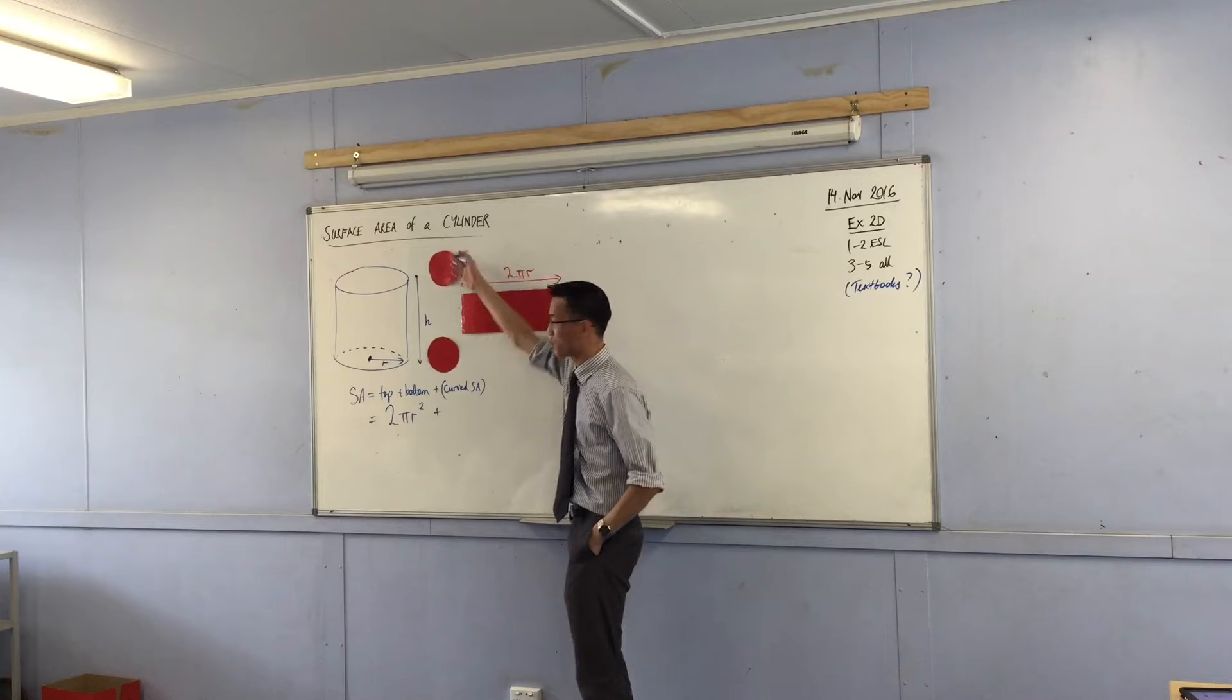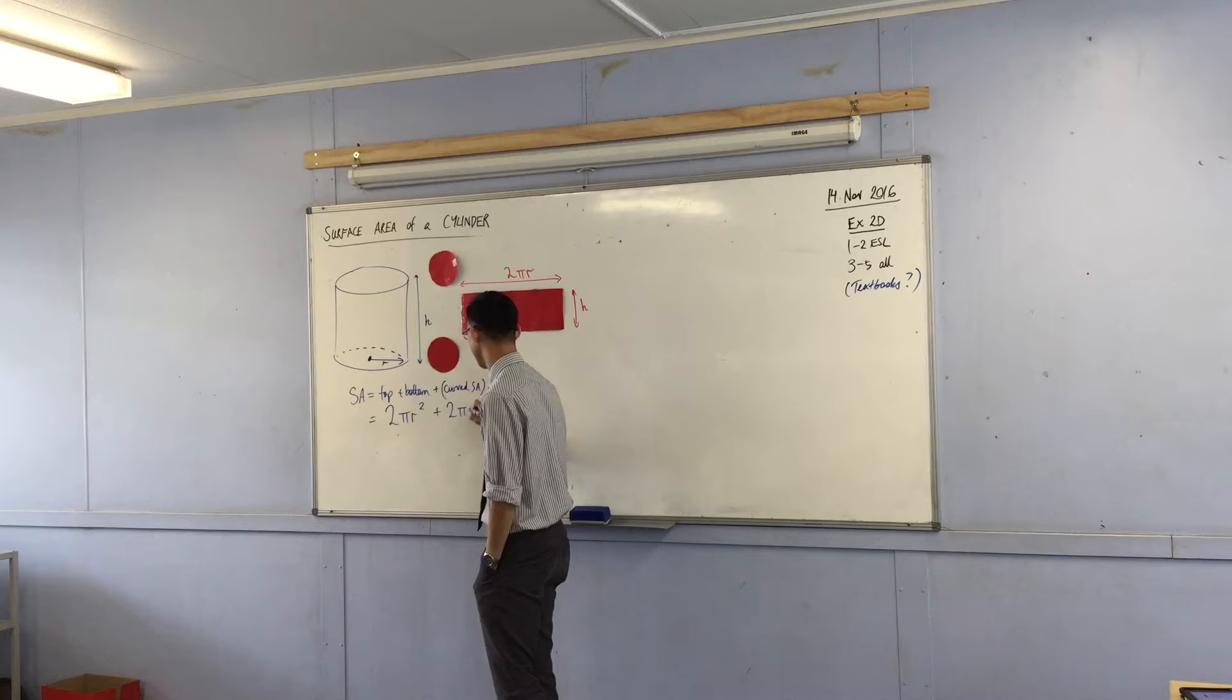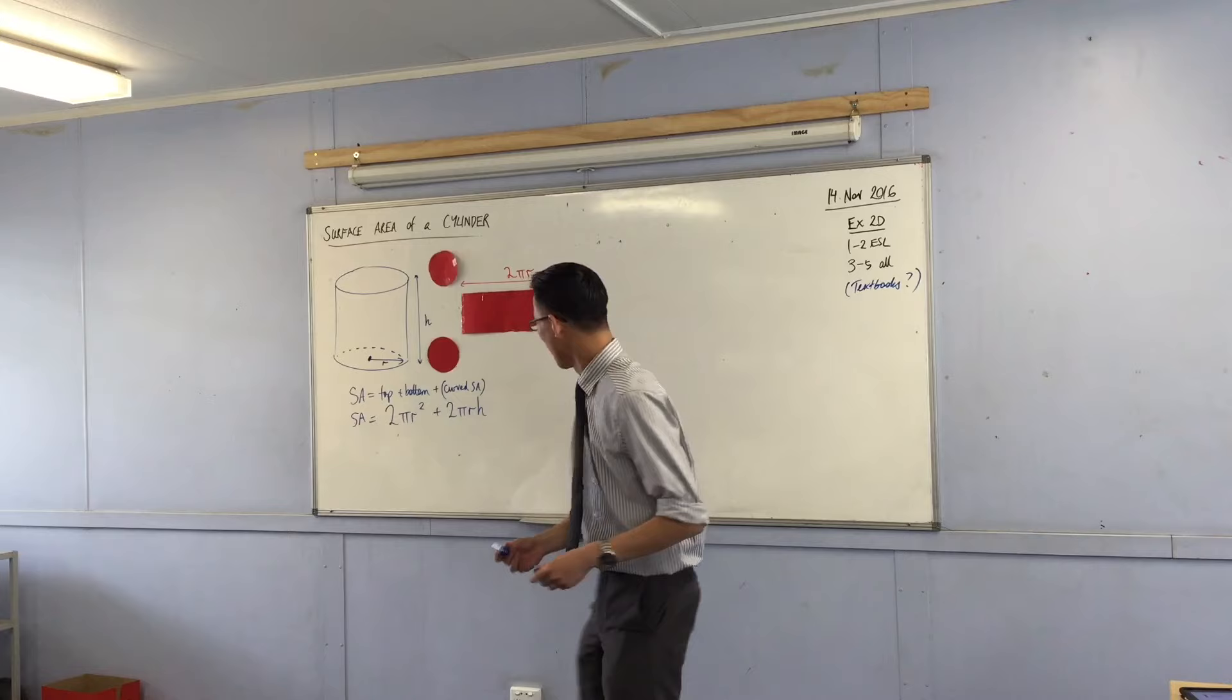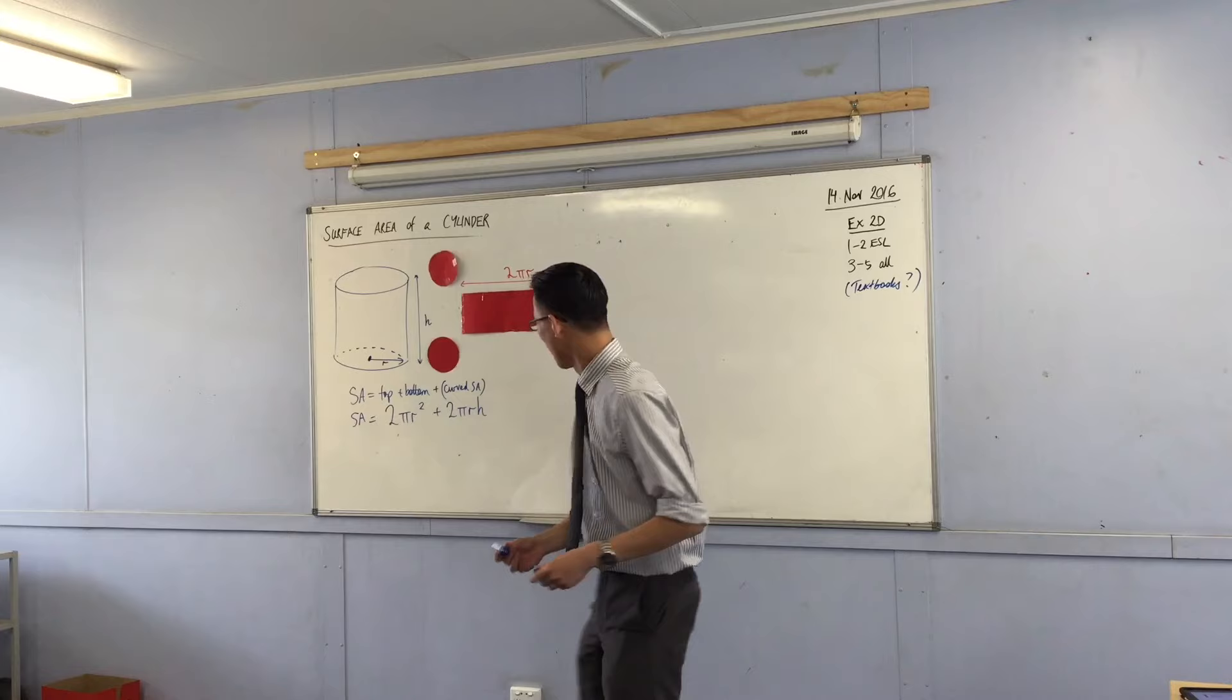2 pi r h. And that's that. It's not complicated, right? In fact, it's one of the nicest, most memorable formulas that there is in measurement. 2 pi r squared, so yeah. The 2 pi r squared, that's the circles. 2 pi r h, that's the curved part.